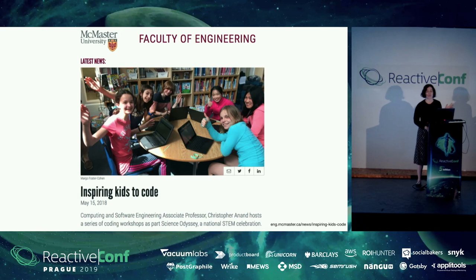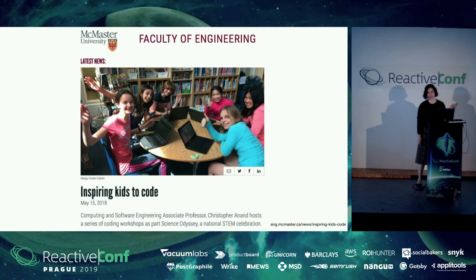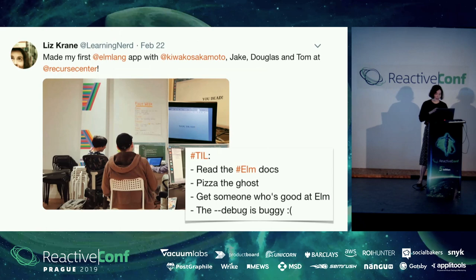ELM is actually used by McMaster University to teach 10-year-old kids how to code as their very first language. I can't imagine a headline like 'university teaches 10-year-olds their first language with Haskell' — that just wouldn't happen. So I figured if 10-year-olds can learn a functional language as their very first one, I can probably figure it out too. I started learning ELM while at the Recurse Center — look it up, it's an amazing group of people.